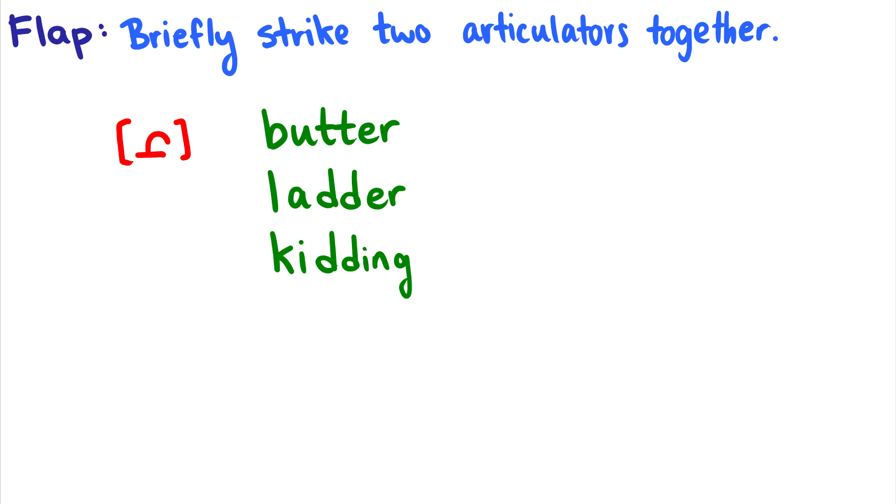So those are pretty much all the types of sounds you learn in an intro course. But I want to introduce one more because it's really important for transcription when hearing words. And that's the flap. So the flap is when two articulators briefly strike together. So these are all examples of the alveolar flap. So this is alveolar. And this makes the sound like in butter, or ladder, or kidding.